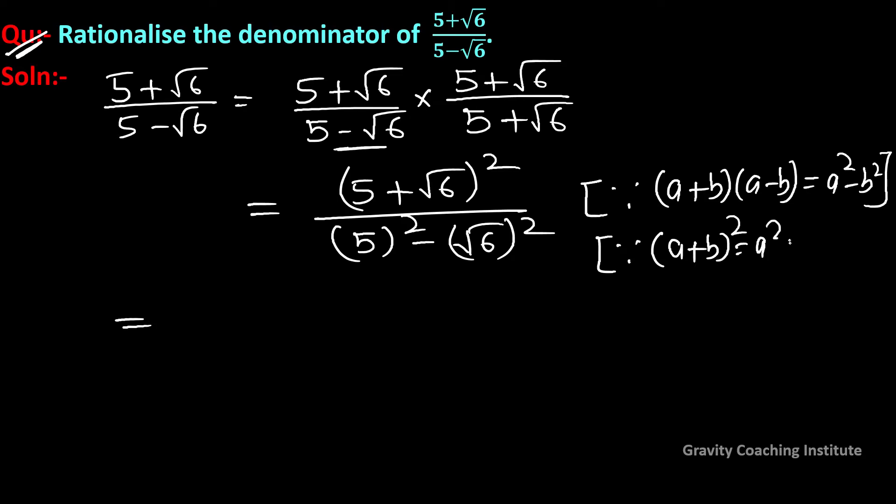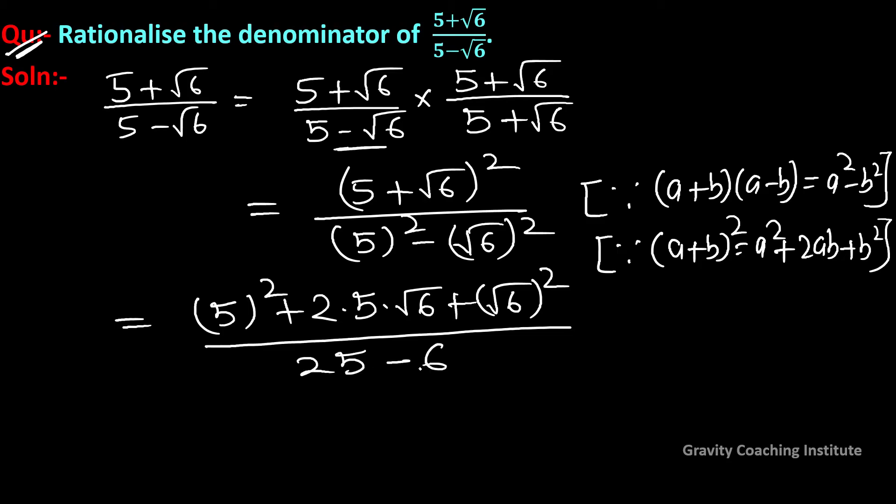The (a + b)² identity gives us a² + 2ab + b². So we get 5² + 2(5)(√6) + (√6)² equals 25 + 10√6 + 6.